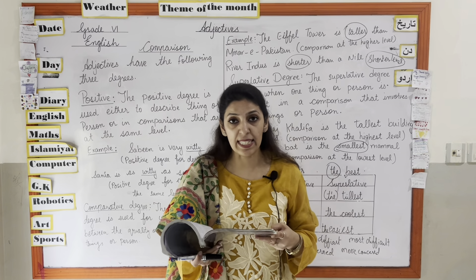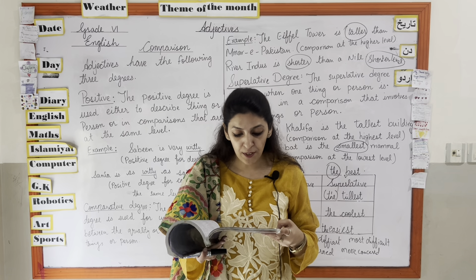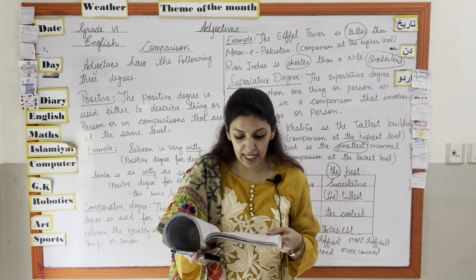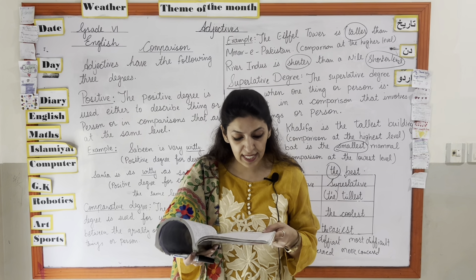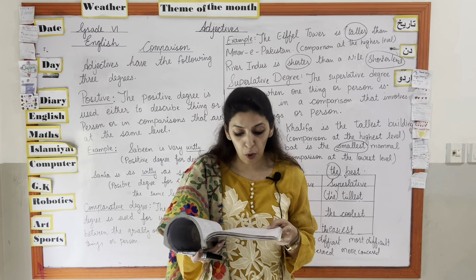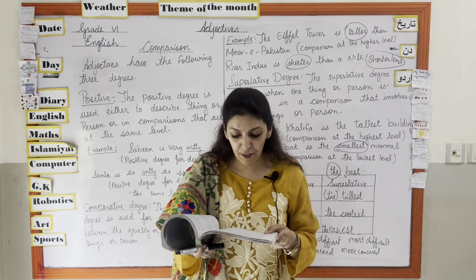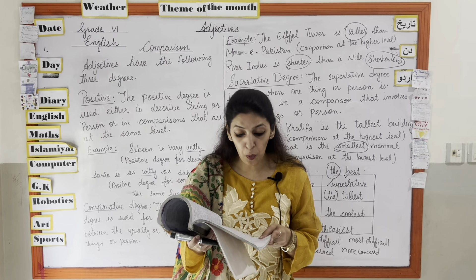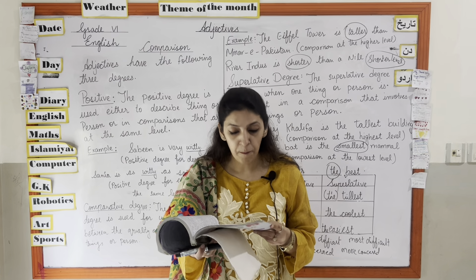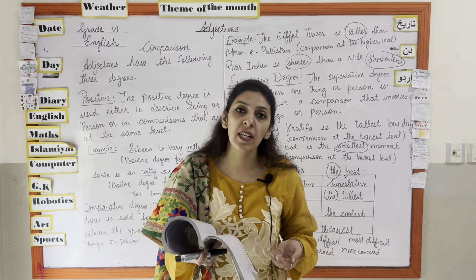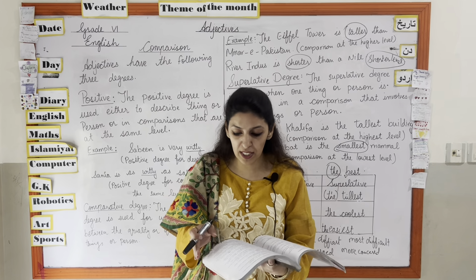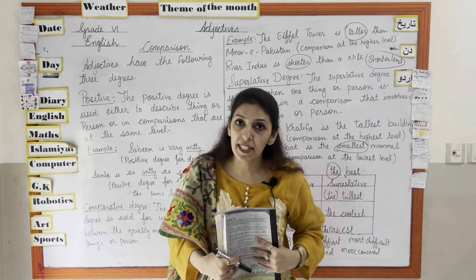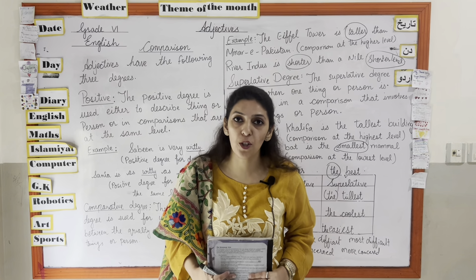There is also an exercise on page 46 called 'Let's Revise': rewrite each sentence using an appropriate degree of comparison as indicated. For example, 'The red dress was pretty' changed to comparative degree becomes 'The red dress was prettier than others.' You need to add more words to make the sentence appropriate. Complete all these exercises and submit your books on Friday. Thank you so much, Allah Hafiz.